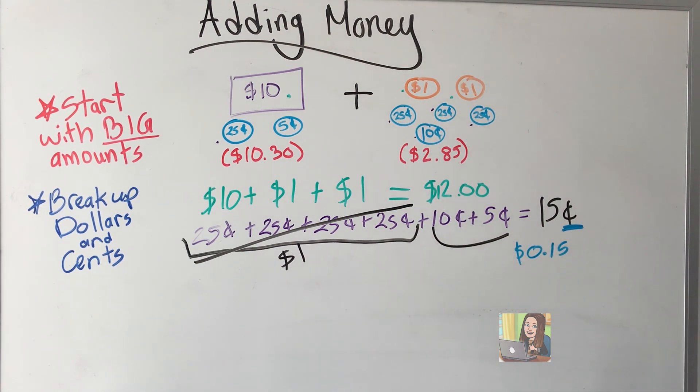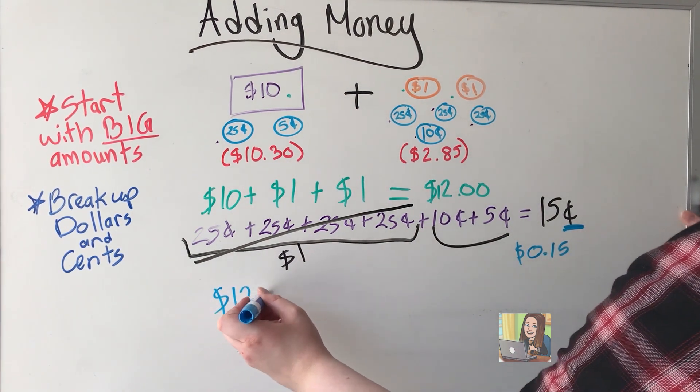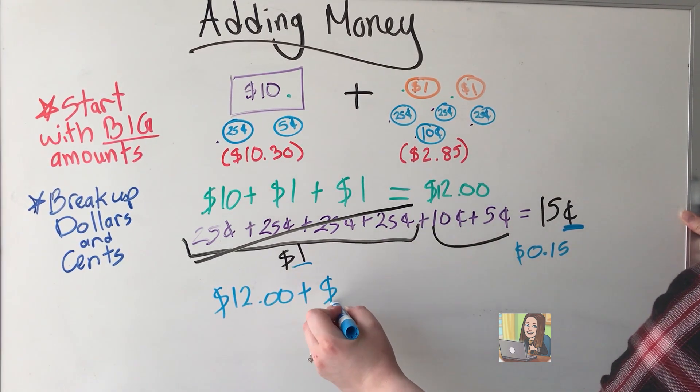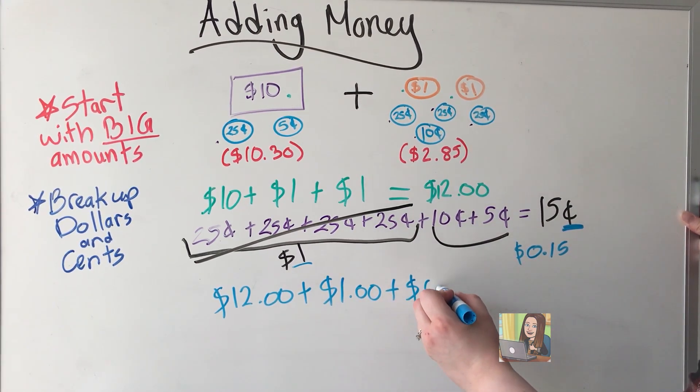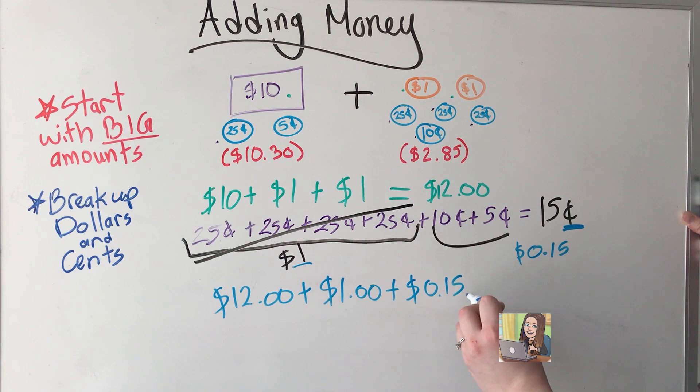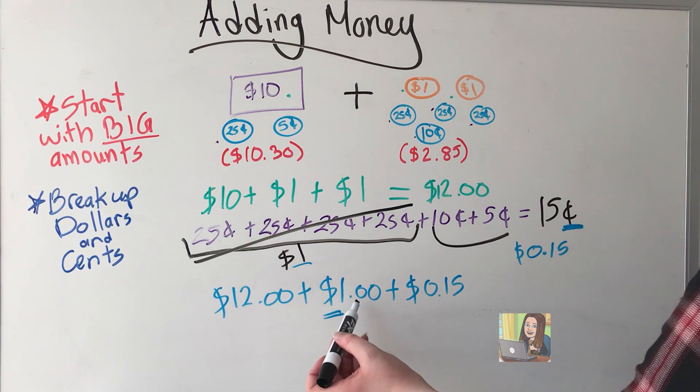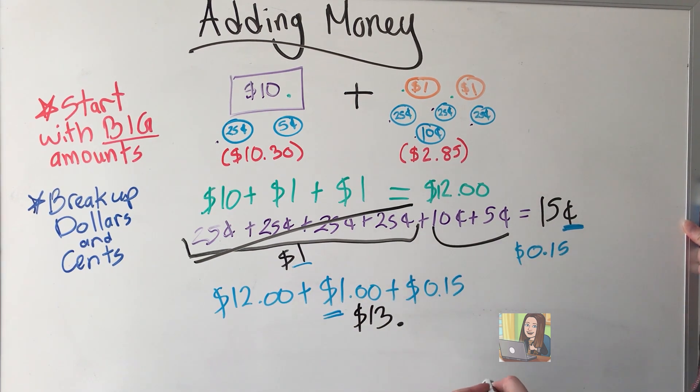Let's add them together. So I have my $12. $12 plus my $1 that I found in all the change. And my $0.15. So $12 plus $1.13 is $13.15.